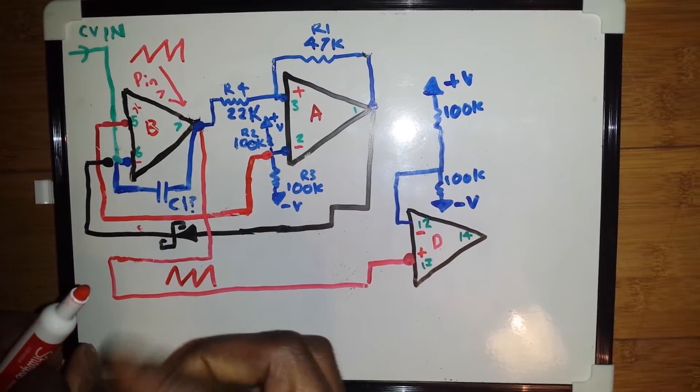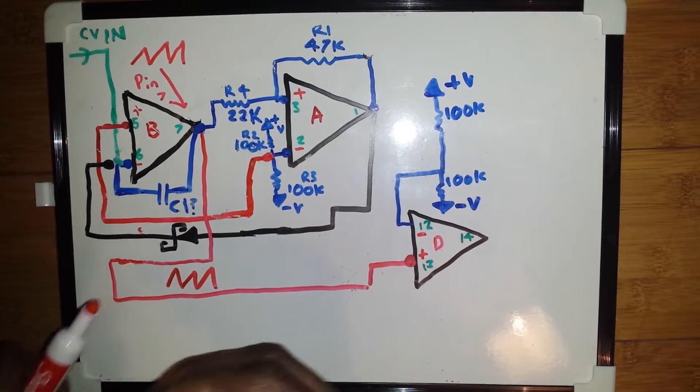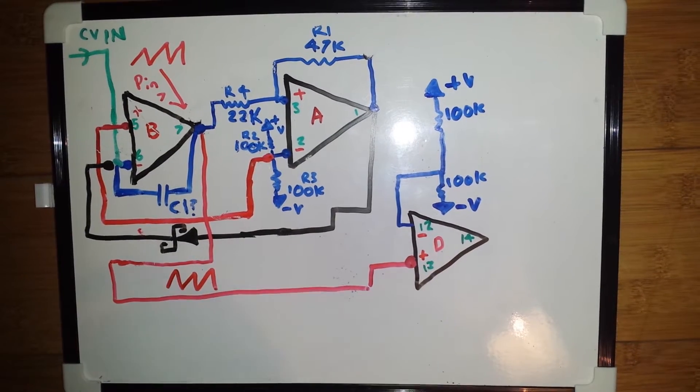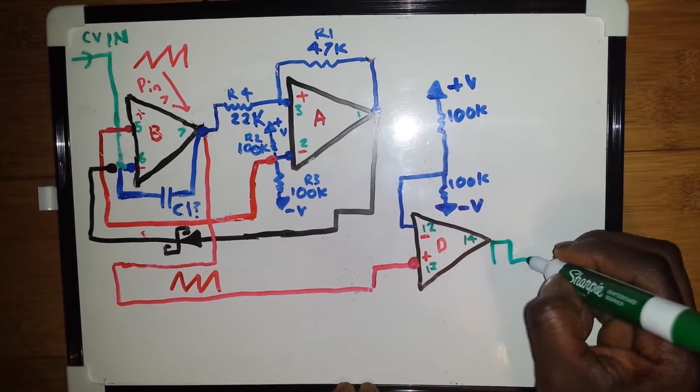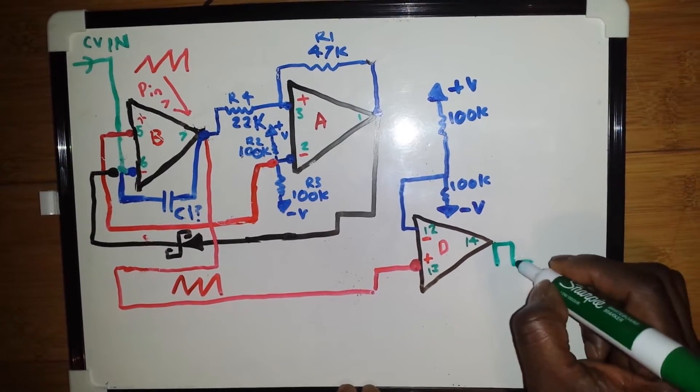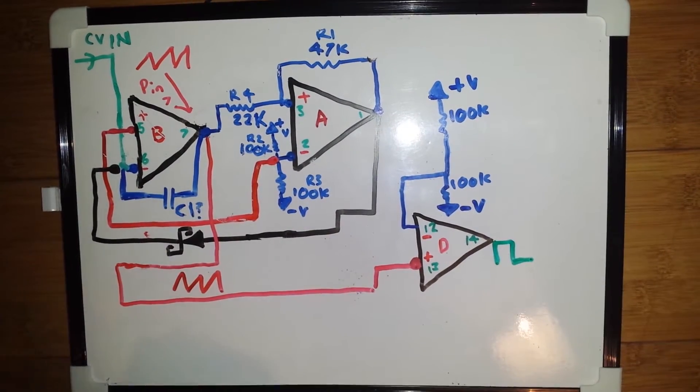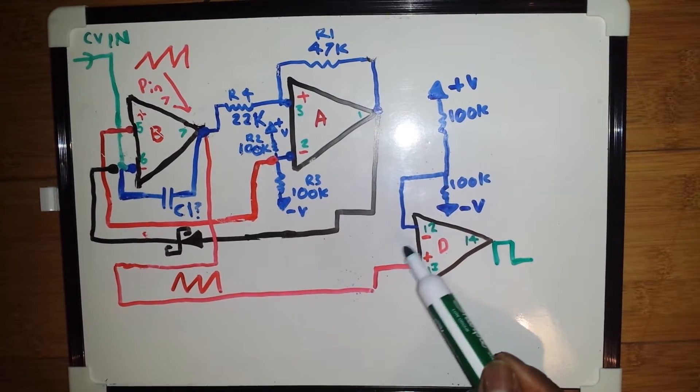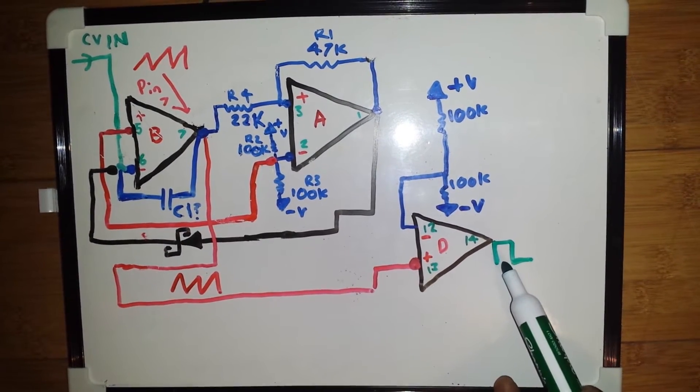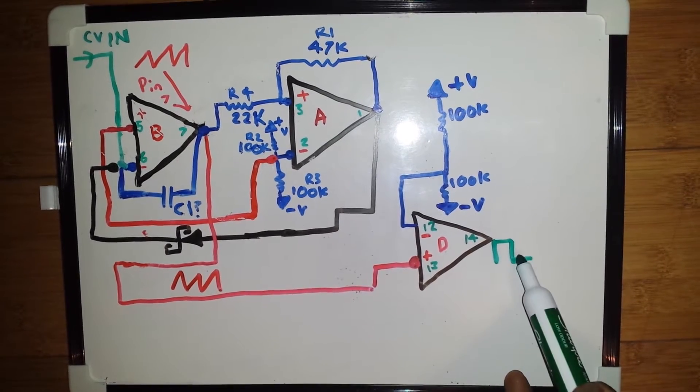Now when we check the output of pin 14 we should have a square wave which is pretty much at 50% duty cycle. Now what we can do with that is make that a variable pulse stroke square wave.